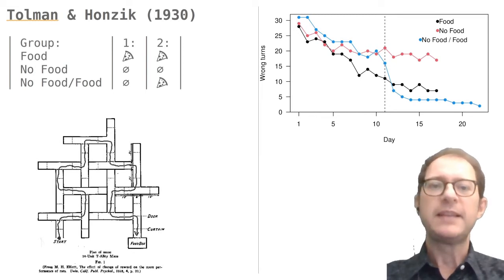But when, on the 11th day, they started to find food at the end of the maze, these rats behaved dramatically different from the second group. They appeared to learn overnight and became even better than the first group that had been rewarded with food all along.